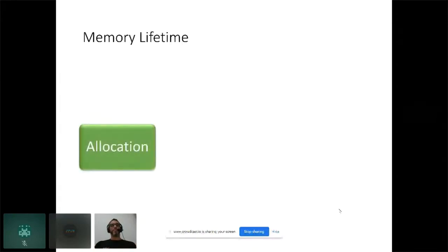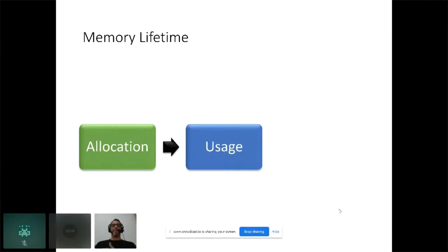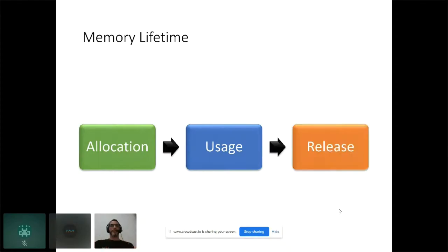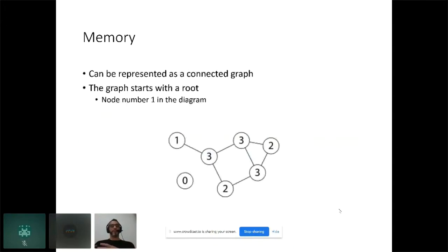When you want to use memory in your application, the operating system will allocate that memory to your program. Once the memory is allocated, your program can read from and write to it. Once the memory is unused, it will be released back to the pool of free memory.